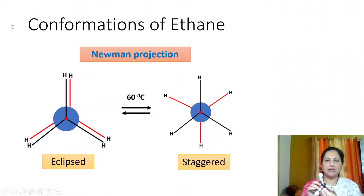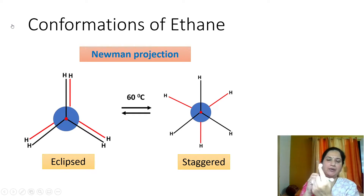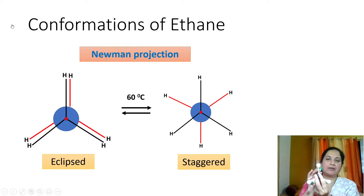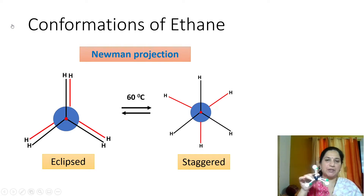Initially, suppose the ethane molecule is like this. You can see the front carbon and three hydrogens attached to it. You cannot see the back carbon and back three hydrogens, as they are exactly behind the front carbon and hydrogens. This confirmation is called the eclipsed confirmation.